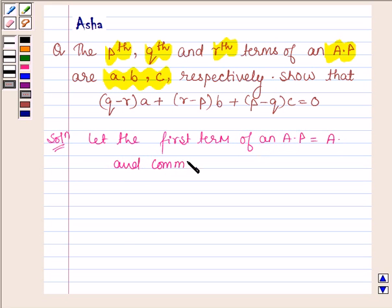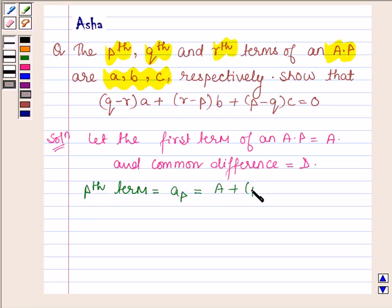and the common difference is equal to capital D. So the pth term which is denoted by a_p will be equal to A + (p-1)D